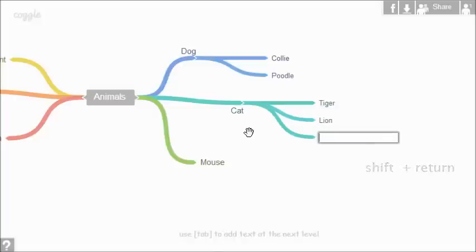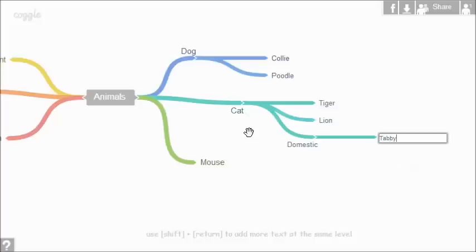If I want to make another list, like for domestic cats here, I can press TAB after typing to do so, like this. And I'll use SHIFT and RETURN again to create another list. These keyboard shortcuts allow you to produce your Coggle much quicker.